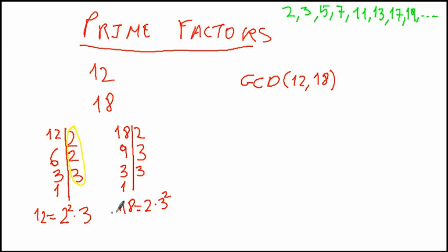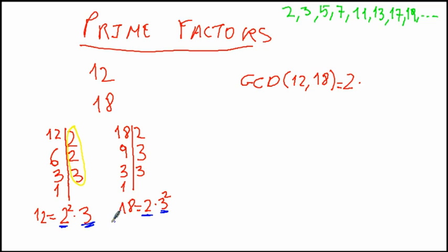We have to take only the common factors, but to the lowest power. As you can see, 2 appears in both — we have to choose 2, but which is the minimum power? Here it's 2¹ and here it's 2¹, so the lowest is 2 to the power of 1. There is another repeated factor: 3 appears in both numbers.